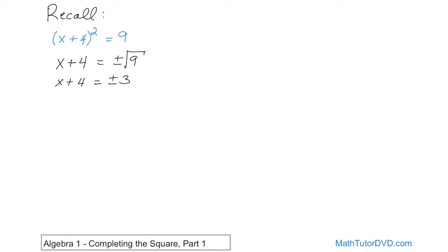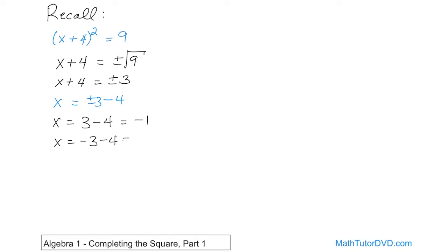Now, to solve for x, we're going to subtract 4 from both sides. We have plus or minus 3, so we subtract 4 from the left and 4 from the right. That gives us two answers because we have plus and minus 3. So x can be 3 minus 4, which is negative 1, or separately, x can equal negative 3 minus 4, which is negative 7. So you have two answers here.